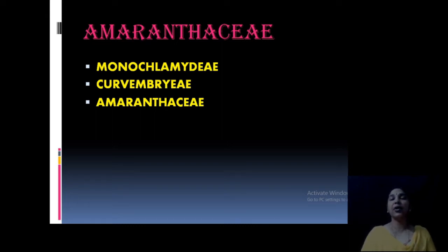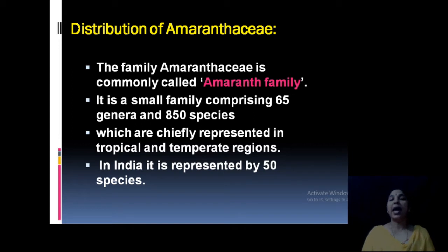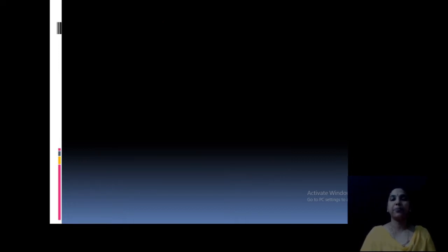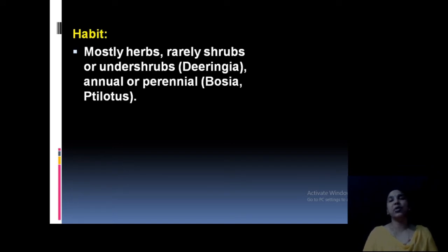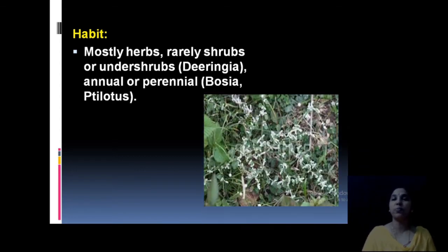This family is also known as the amaranth family. It is a small family comprising about 65 genera and 850 species, widely represented in India with about 50 species. The usual habit is herbs — most of them are herbs — but shrubs and undershrubs are also observed. One example of an undershrub is Deeringia. Both annuals and perennials are found in this group.